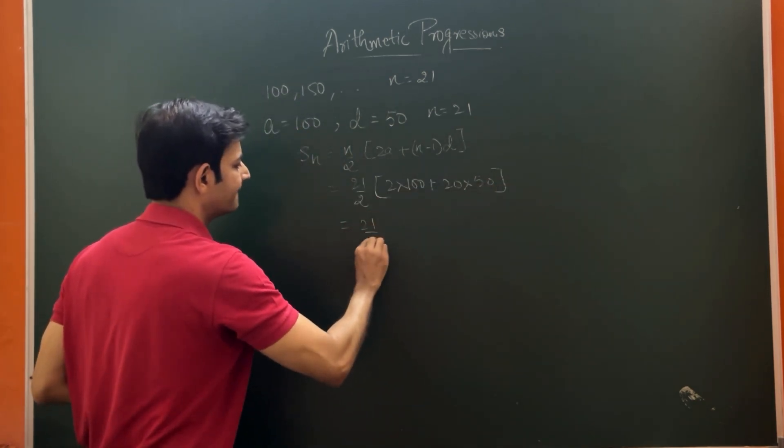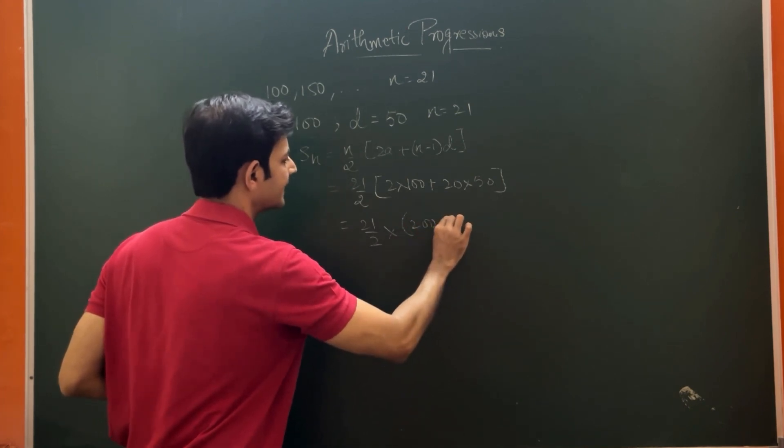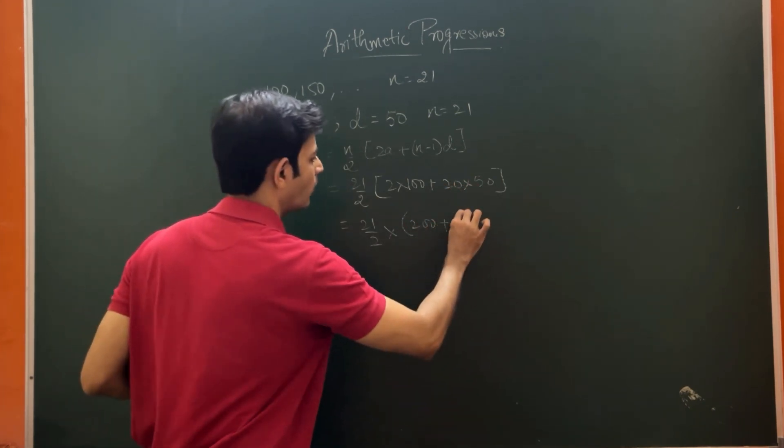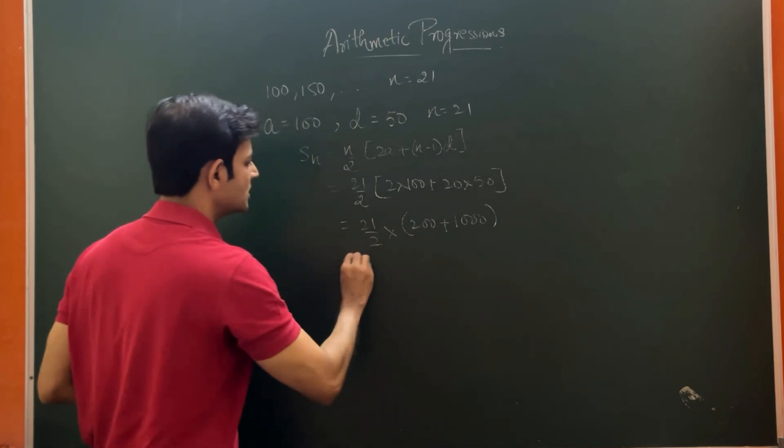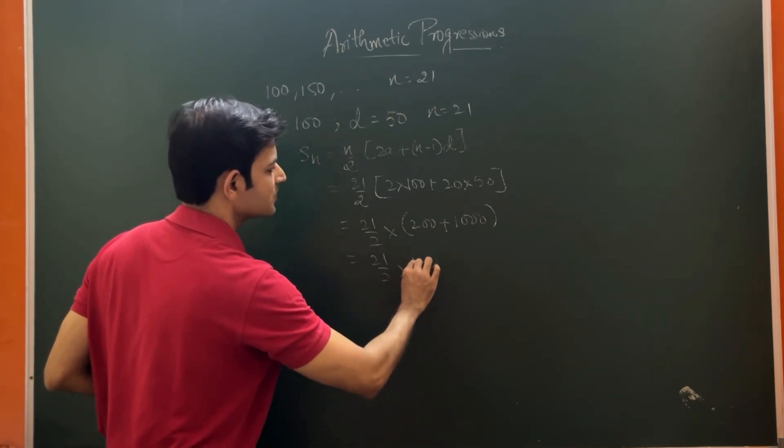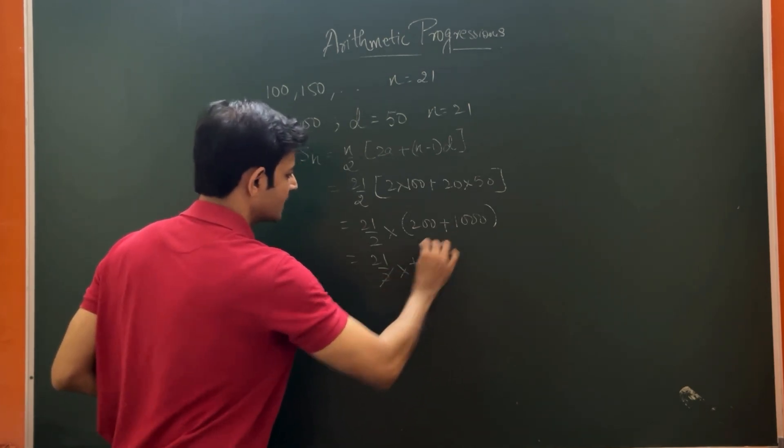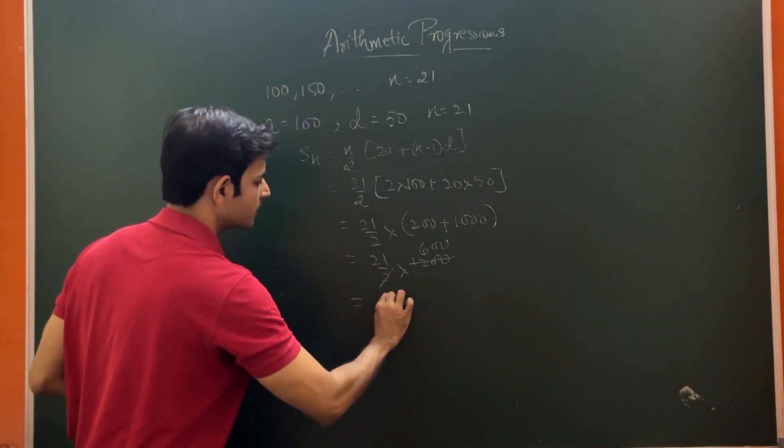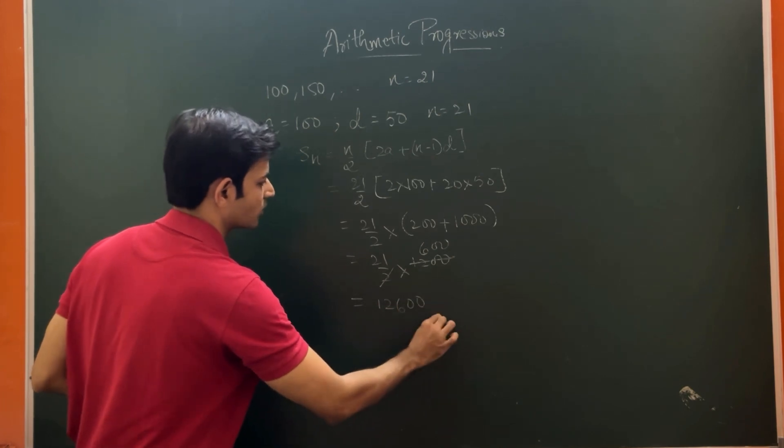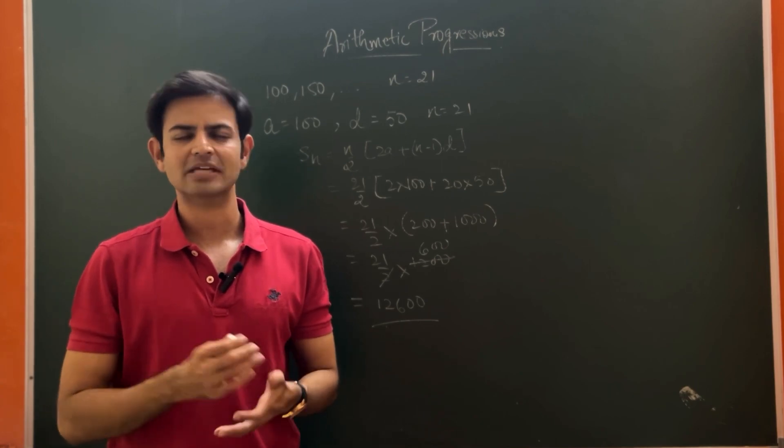This will be 21 by 2 into 1,200. We can strike this off as 600. So the answer is 12,600. Similarly, you can do more questions based on these formulas from your textbooks and the reference books.